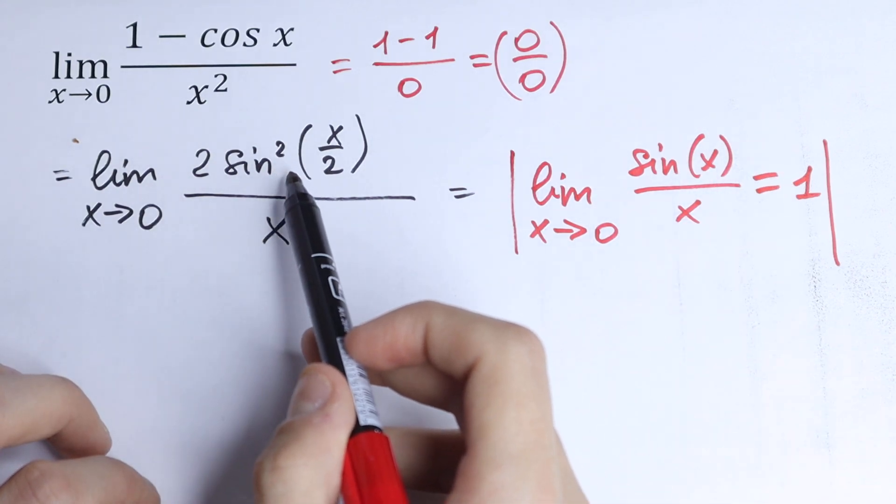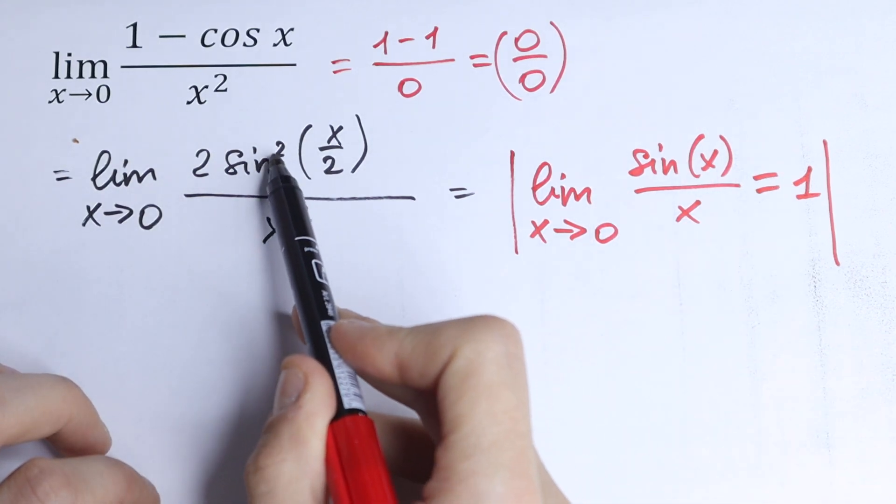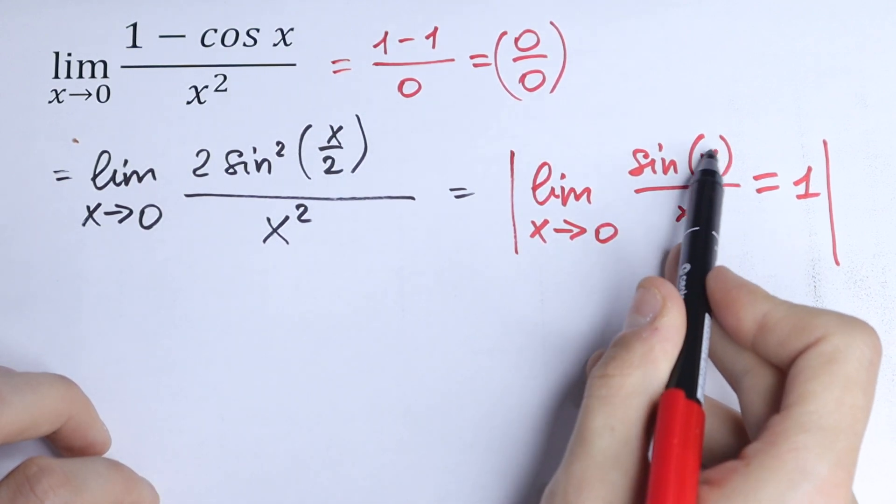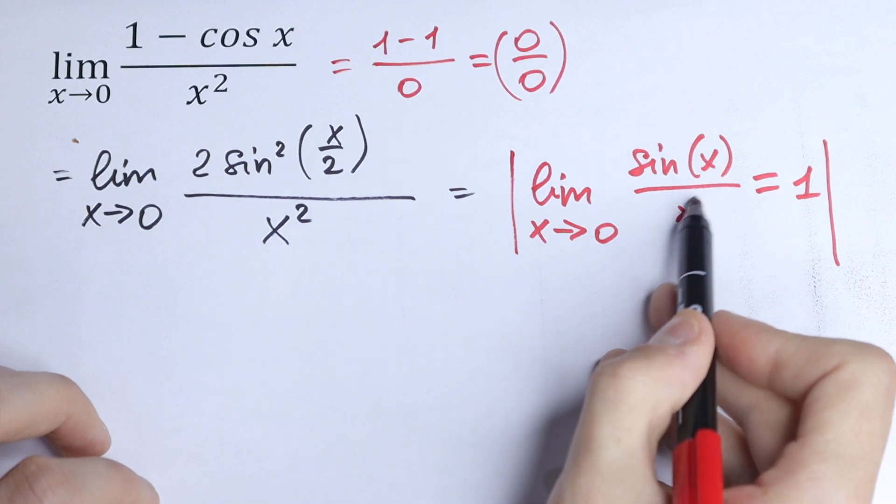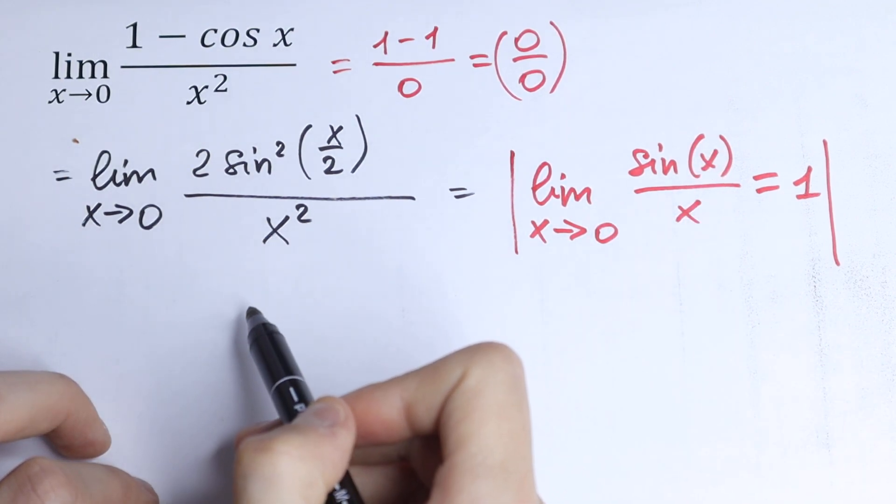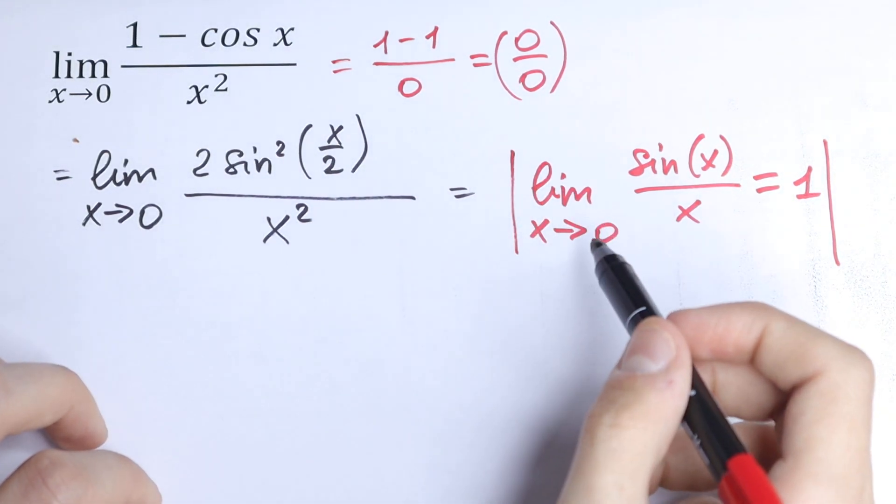We have sin²(x/2) and right here we need the same argument in our numerator and denominator. But right here we have x² but we need x/2. How can we do this?